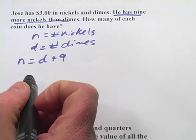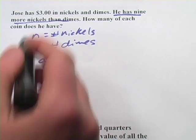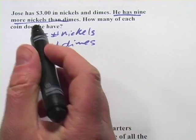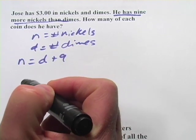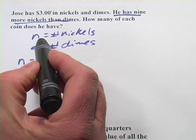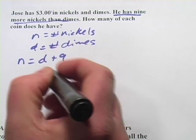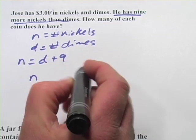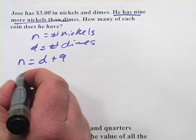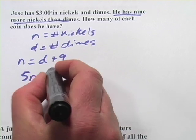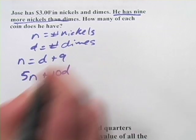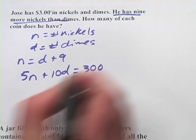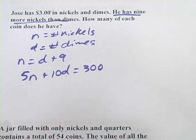The next equation has to do with the values of the coins and the total value that you've got. And here you want to make a decision. Are you going to be in dollars or in cents? I'm going to choose to be in cents. I'm going to convert this three dollars into three hundred cents. So we'll do that equation like this. Nickels are worth five cents. So five times each nickel plus ten times each dime, because dimes are worth ten cents, adds up to three hundred cents. So that's our other equation.